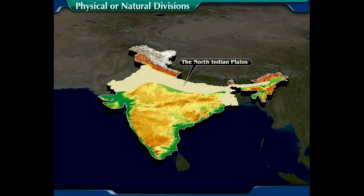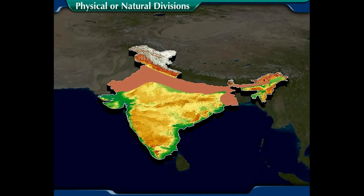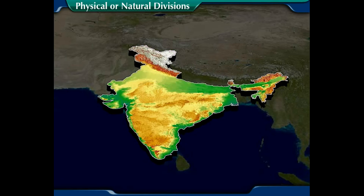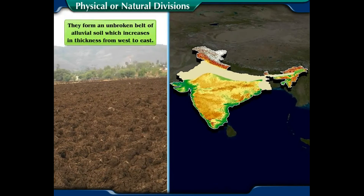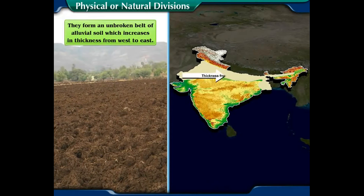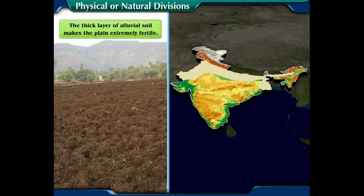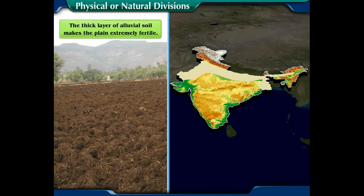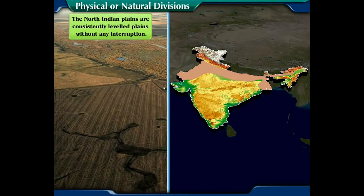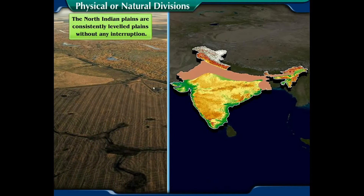The north Indian plains cover most of northern and eastern India. The physiographic landscape of this plain is very different from that of the northern mountain ranges. Characteristics of the north Indian plains: Number one, they form an unbroken belt of alluvial soil which increases in thickness from west to east. The thick layer of alluvial soil makes the plain extremely fertile. Number two, the north Indian plains are consistently leveled plains without any interruption.